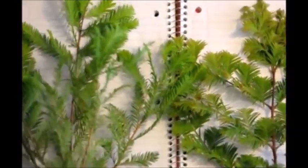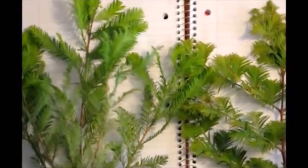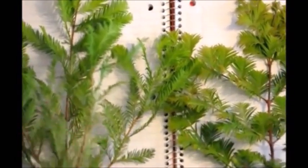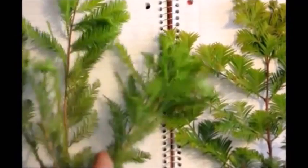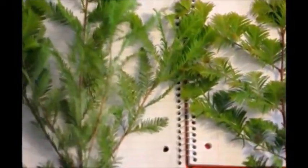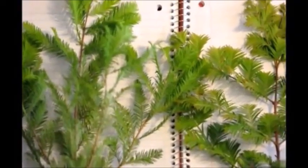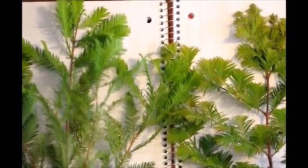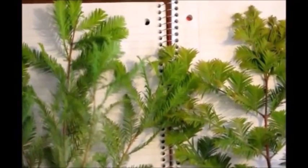First off, the similarities between the two are very much apparent. They both have green foliage. They both have a browner bark to them. They both are a deciduous conifer, which means that they have cones and they lose their leaves in the wintertime.